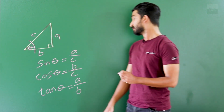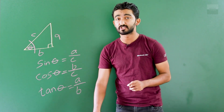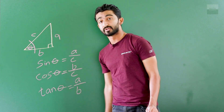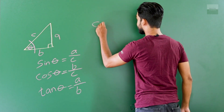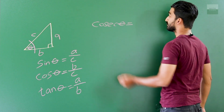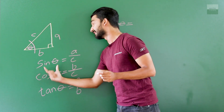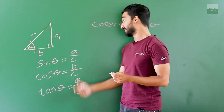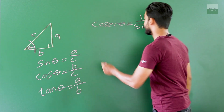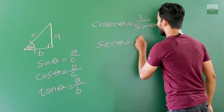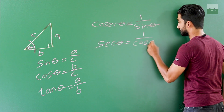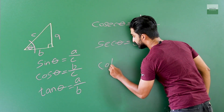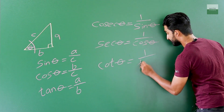In advanced level, you are learning another three new trigonometric terms which are called sec, cosec, and cot. These are basically the reciprocals of the three main trigonometric terms. Cosec θ equals the reciprocal of sin θ, which is 1/sin θ. Sec θ equals the reciprocal of cos θ, which is 1/cos θ. And cot θ equals the reciprocal of tan θ, which is 1/tan θ.